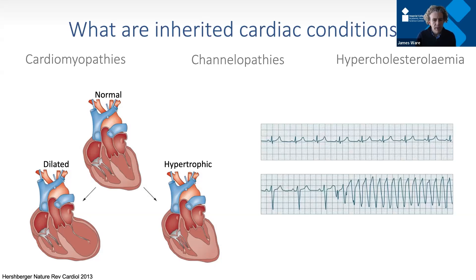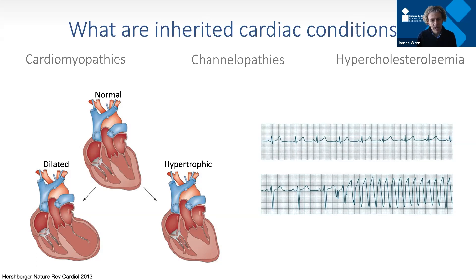We can group these conditions into three main groups. Cardiomyopathies refer to problems with the contraction of the heart muscle itself, often diagnosed using imaging — ultrasound or MRI scans — which show abnormal heart size or contractility. There are two types shown here: dilated cardiomyopathy, which describes a heart with enlarged chambers and reduced pump function, and hypertrophic cardiomyopathy, which describes a heart with small chambers and very thick, hyperactive walls.